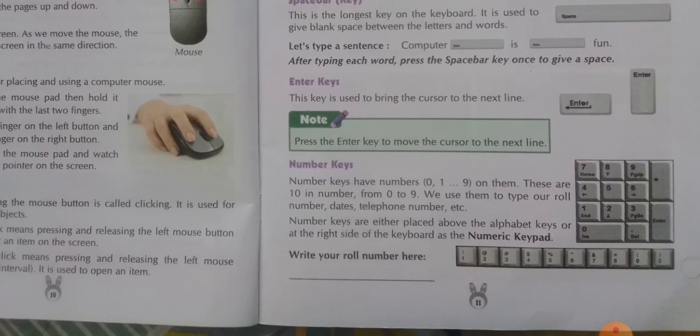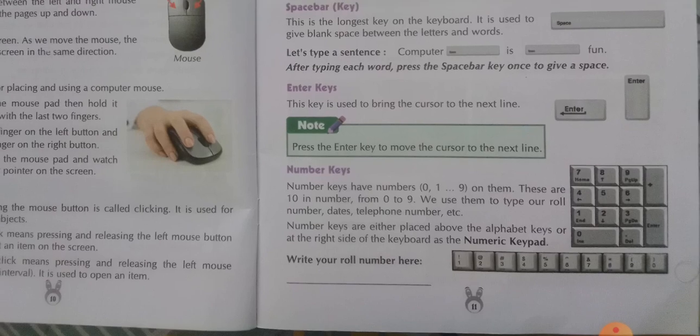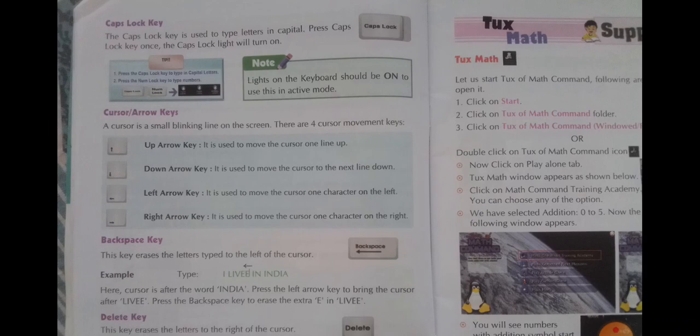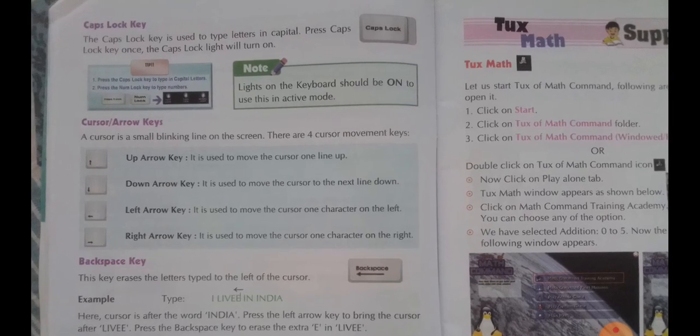Number keys: there are 10 number keys in our keyboard, 0 to 9. Whenever you want to type a number, you need to press the number keys. Caps Lock key is a very important special key, and there is only one Caps Lock key. Whenever you want to type letters in capital, you need to press the Caps Lock key.